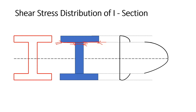Will it increase or decrease? The shear stress distribution of any section is given by F × A × ȳ / (I × b), where b is the width of the section. Since the width of the section is decreasing, the shear stress will increase.